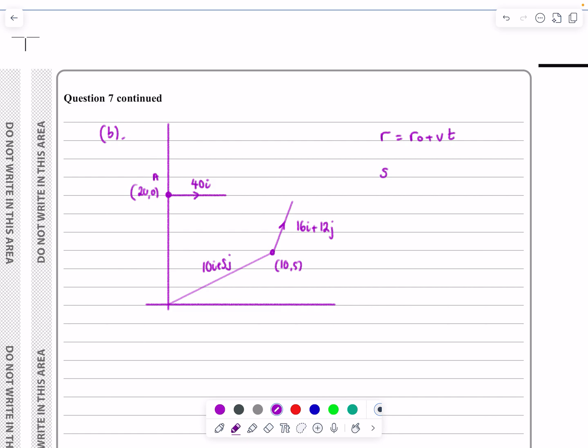If I want to work out what the general S is, R equals R0 plus VT will give me S equals R0 - in this case, that's 10I plus 5J - plus VT, so plus (16I plus 12J) times T. That's the answer. That is the correct answer. I'm just going to tidy this up and write it as 10I plus 5J, and then that's 16TI and 12TJ, so I can write it as how many I's and how many J's. I've got (10 plus 16T)I, and I've got (5 plus 12T)J. That's the one I'm going to use for the rest of the question.